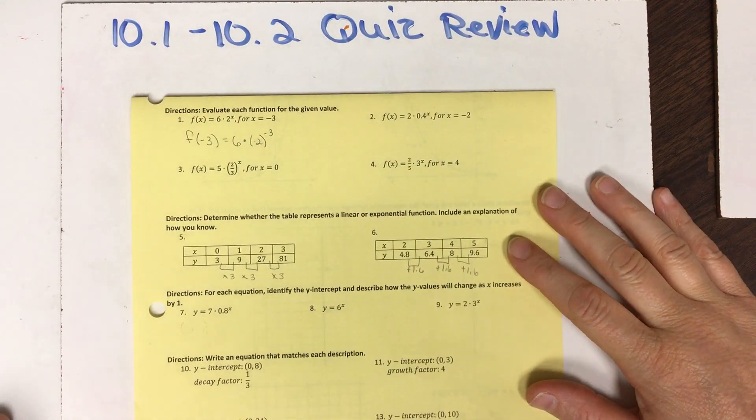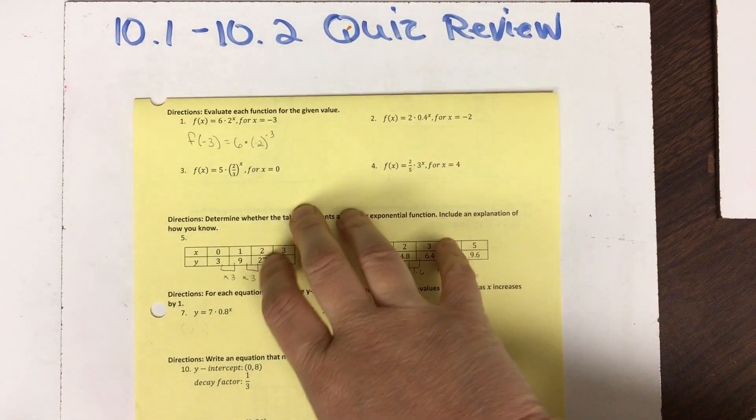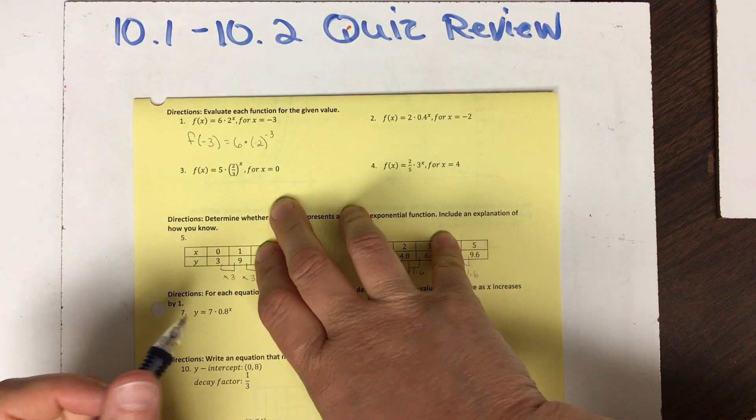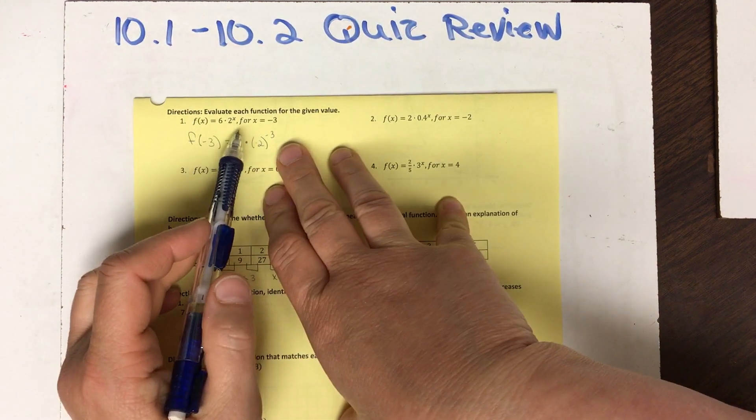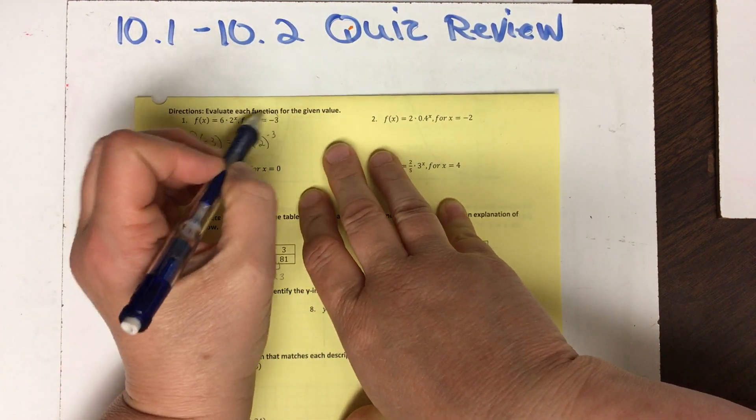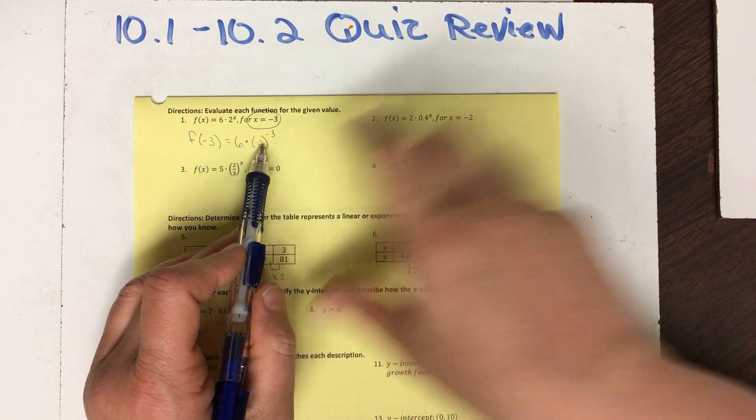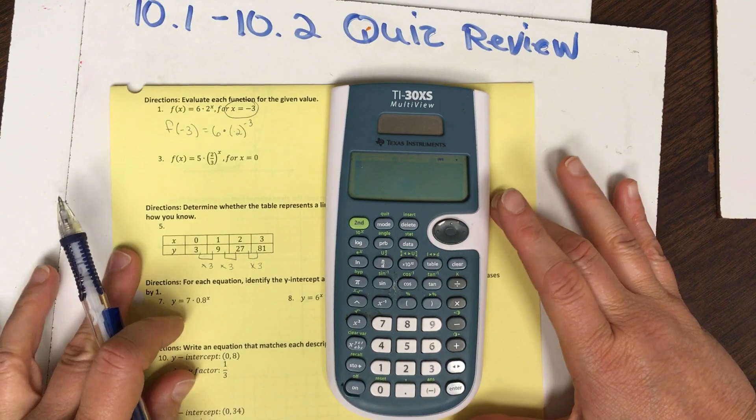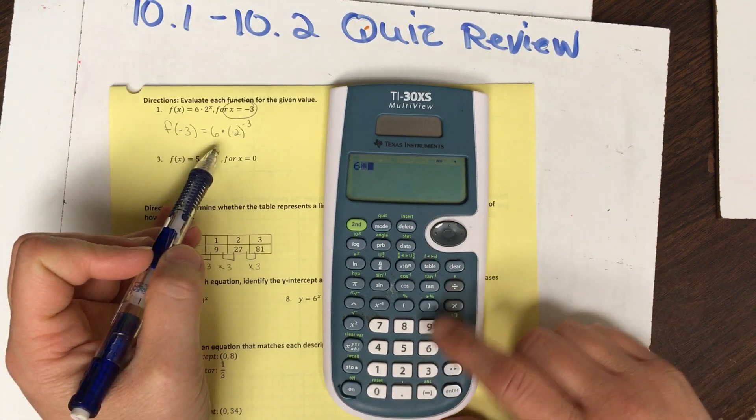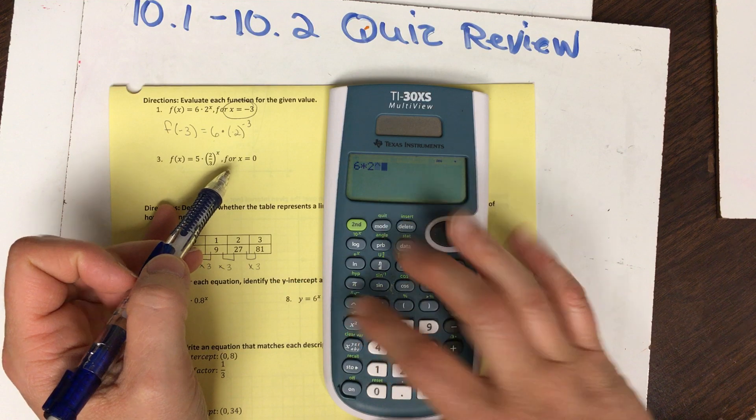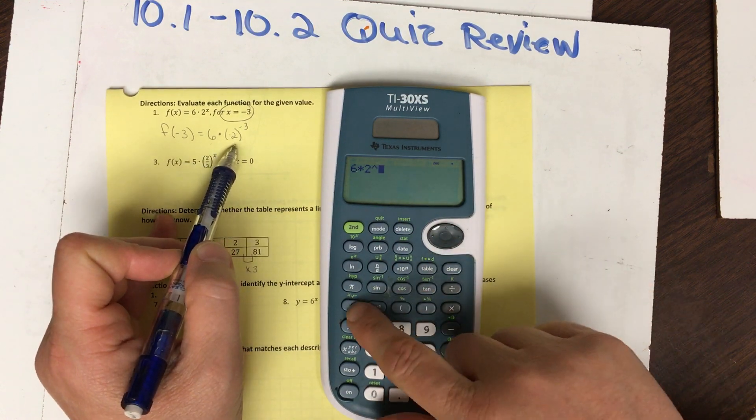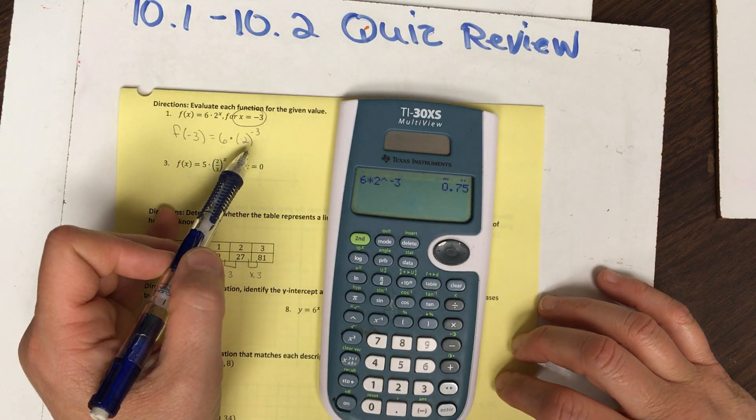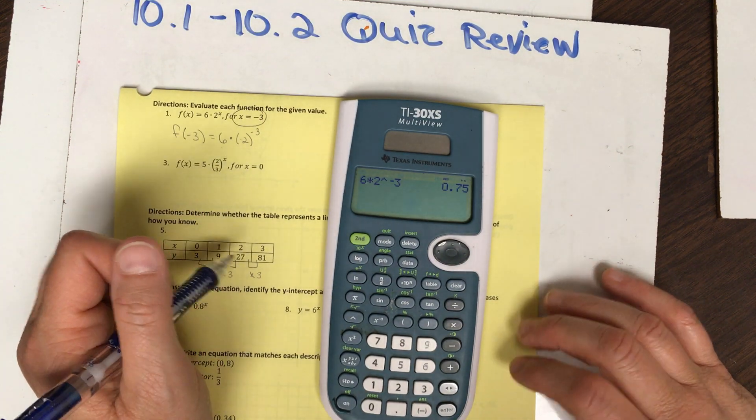Alright, this time we're looking at the quiz review for 10.1 to 10.2, which is our exponential function equations. So I already went in, it says evaluate, and I already put this negative 3 into my equation where I need to put it in my calculator. So on my calculator I'm going to put in 6 times 2, and I'm going to raise my 2 with my little caret to negative 3, and that gives me 0.75.